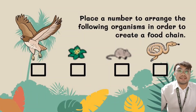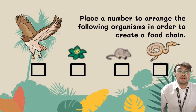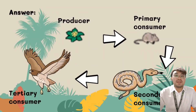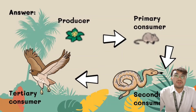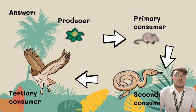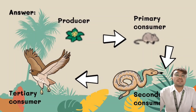Let's have another example. Now it's your turn to design your own food chain. Place a number to arrange the following organisms in order to create a food chain. The first organism in the food chain is the plants, since it is an autotroph and is not dependent on anyone because they can create their own food. Followed by the mouse as a primary consumer, since among the organisms given, they were the only one who can eat the plant. Next is the snake, who will eat the rat. And lastly, the eagle as a tertiary consumer.